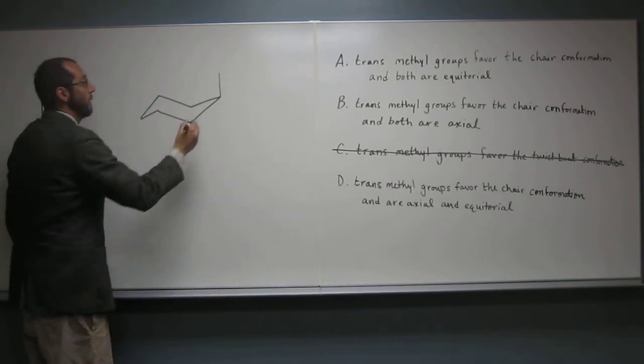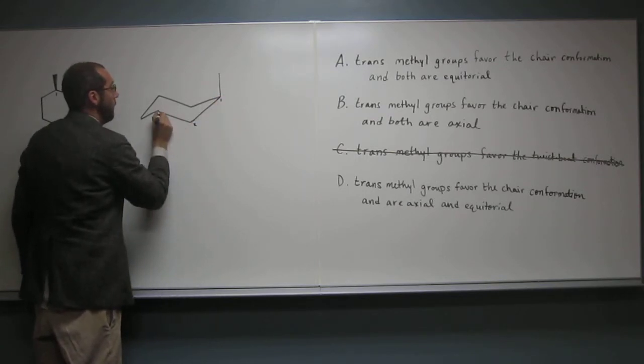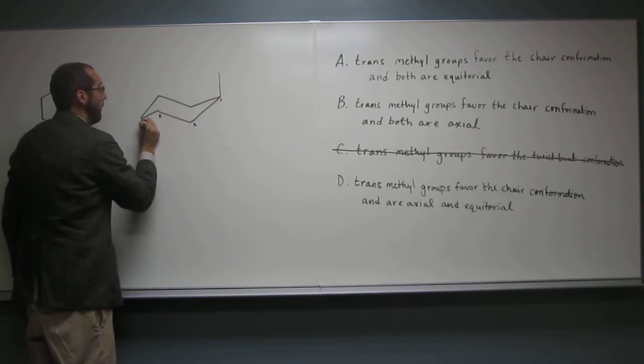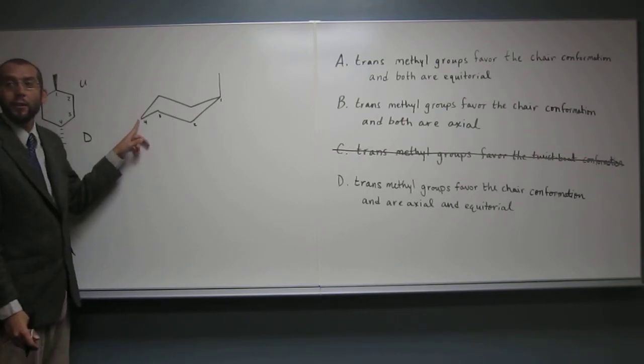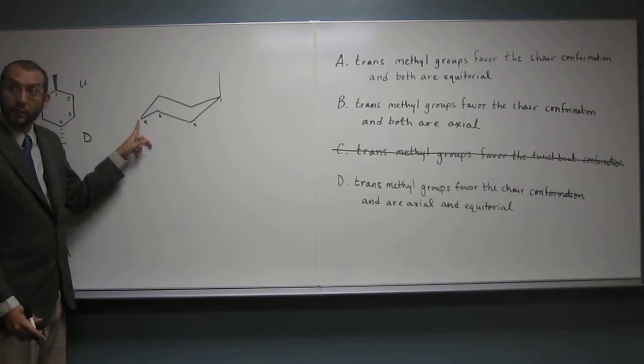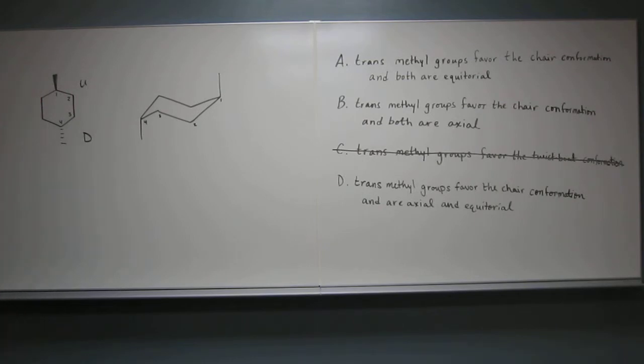Let's go to 4. So that's carbon 1, 2, 3, and 4, right? So this one is what? Down. So here, down is going to be what? Axial. So let's put that in, like that.